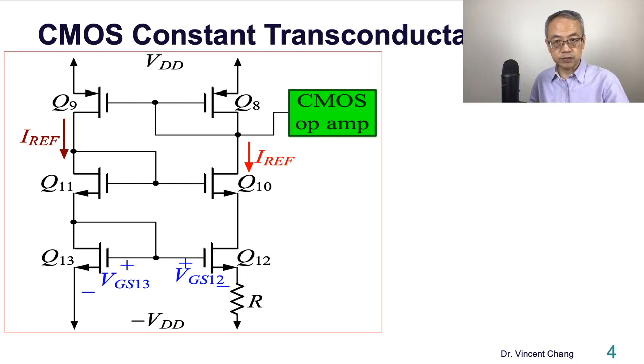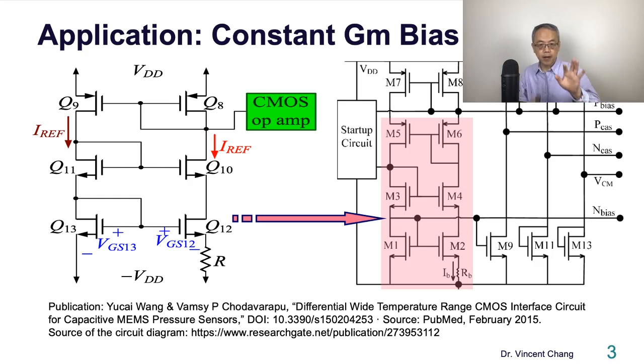This - so it's the same: 13, 12, 1, 2, 11, 10, 3, 4, and 9, 8 on the left correspond to 5, 6 on the right - exactly the same. Then you can recognize this as a constant gm bias.